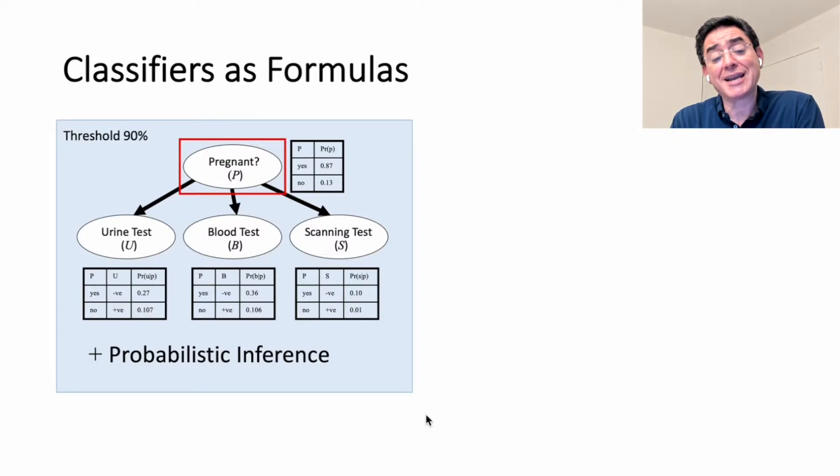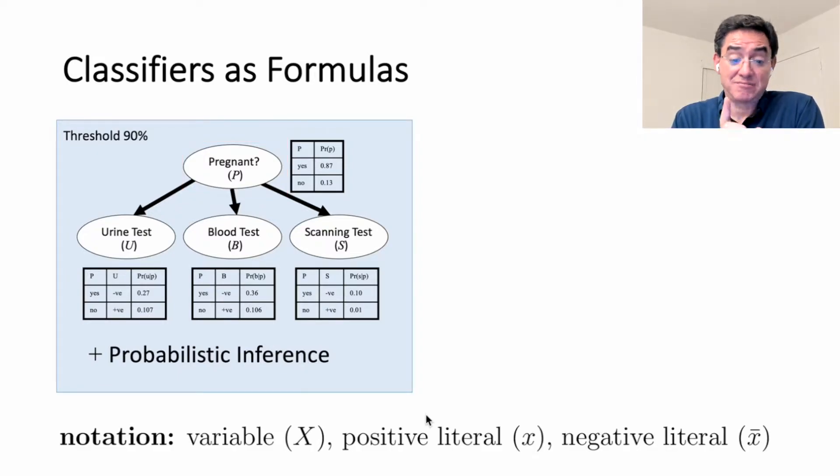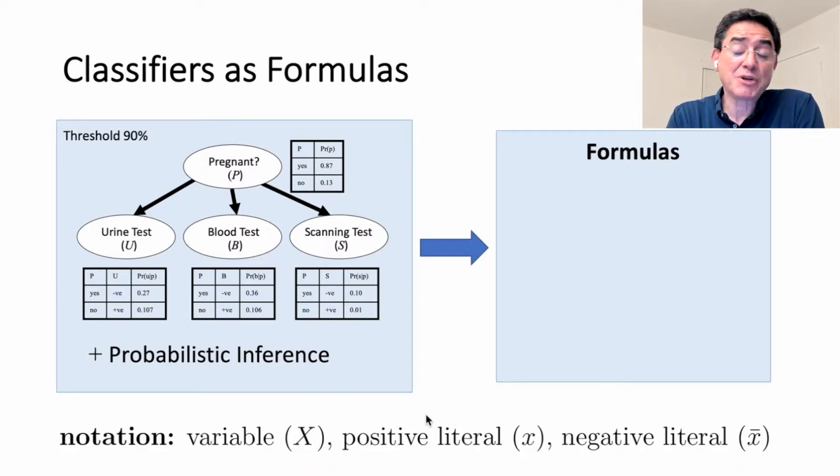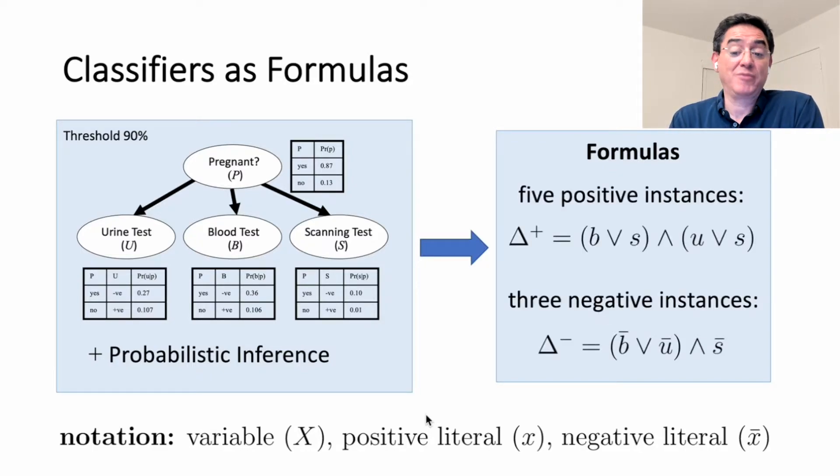The point is, I can capture the behavior of this classifier using formulas. We'll see this next, but first notation. This is a Boolean variable. This says that that variable is true, this says that that variable is false, so positive and negative literals. In this particular case, I just need two formulas to represent this classifier because I have only two classes, positive and negative.